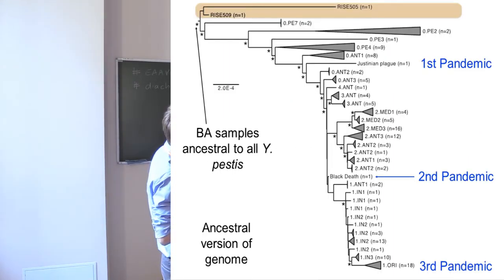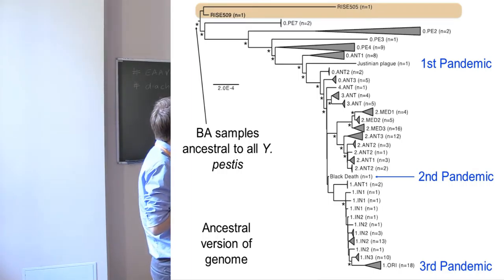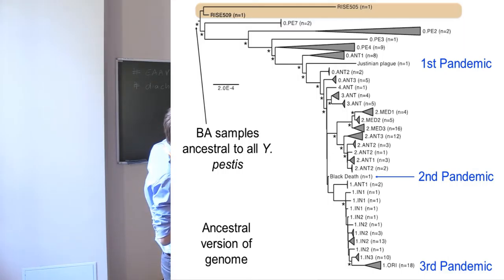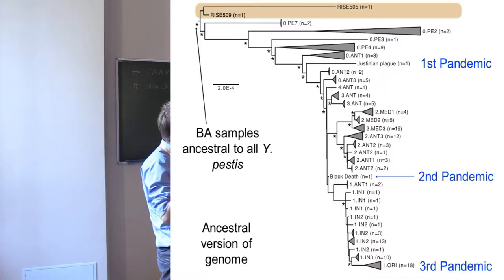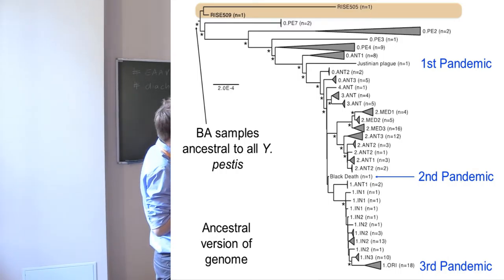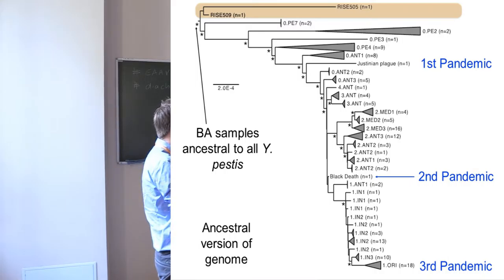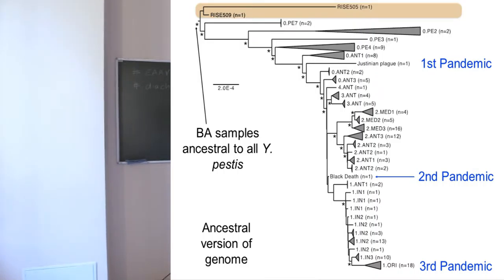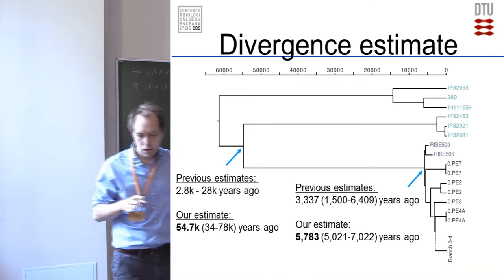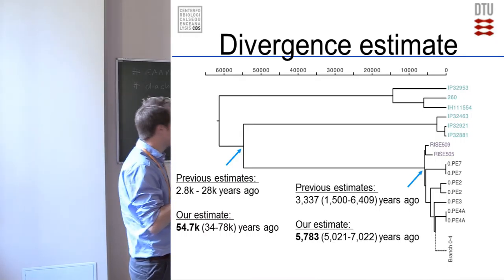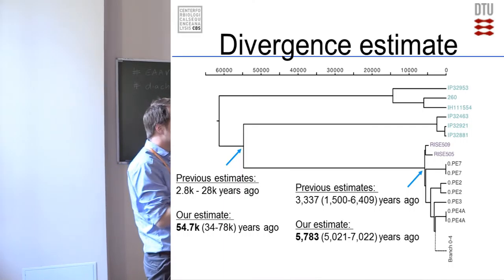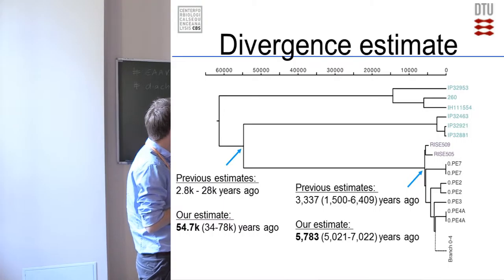If we look further into the pestis tree, we can see that our two Bronze Age samples — in the orange/brown bar at the top — are actually ancestral to all other plague genomes we know today and from all other ancient DNA samples. This means we have the earliest reconstruction of plague genomes. We also put in the strains responsible for the different pandemics. There's been a lot of debate about when pestis evolved and when it diverged from pseudotuberculosis.